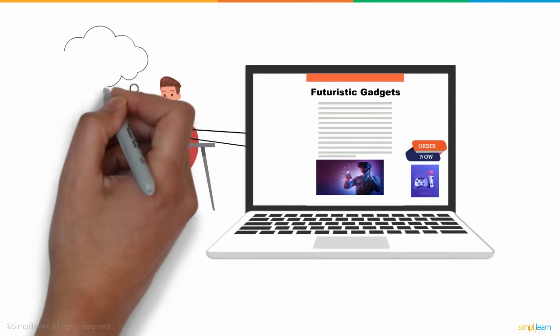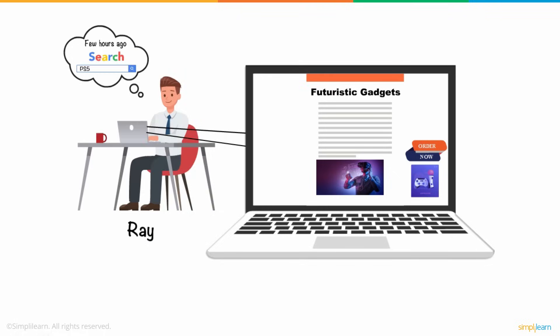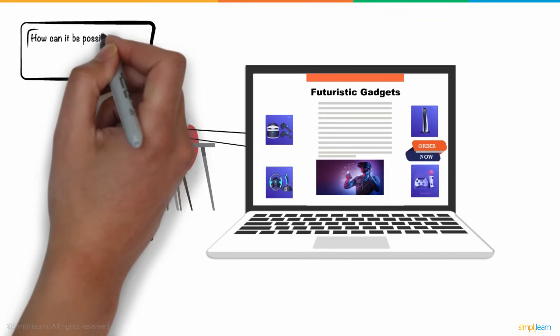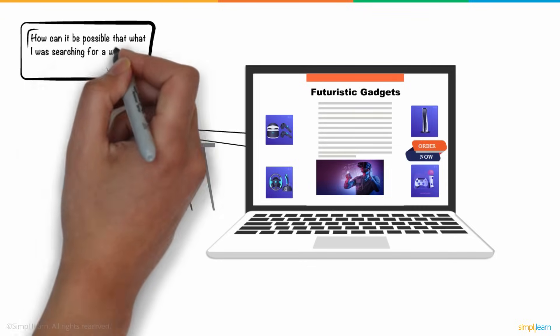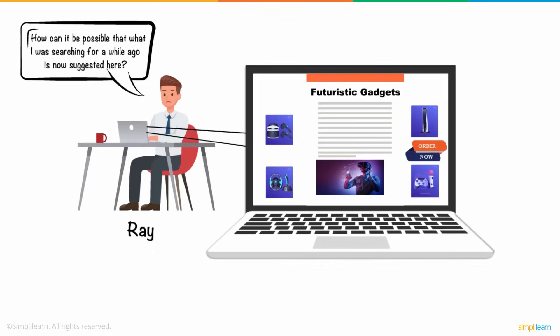He found it a little strange as he recalled searching for that just a few hours ago. Later that day, he came across some suggestive ads popping up related to buying future-leading gadgets. And that is when he freaked out, thinking, how can it be possible that what he was searching for just a few hours or days ago on the internet is now suggesting ads similar to them?